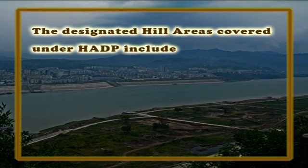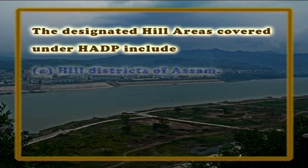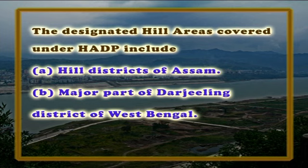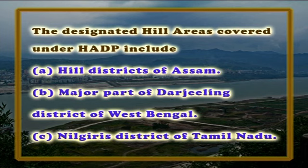However, consequent on the formation of Uttaranchal as a separate state, HADP is no longer in operation in the hill districts of Uttaranchal of Uttar Pradesh. Presently, the designated hill areas covered under HADP include hill districts of Assam, major parts of Darjeeling district of West Bengal, and Nilgiris district of Tamil Nadu.